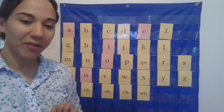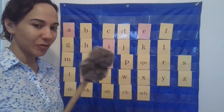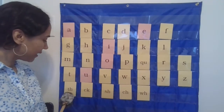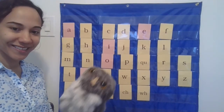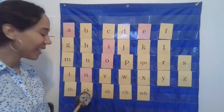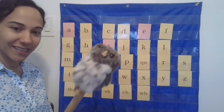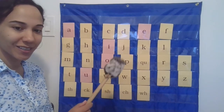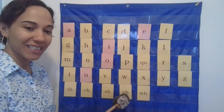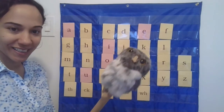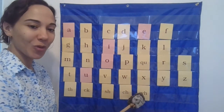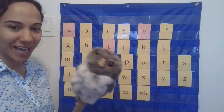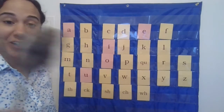Excellent. Now get ready to echo along when baby echo flies toward the screen — remember, that is when you repeat: T-H thumbs, C-K suck, S-H ship.